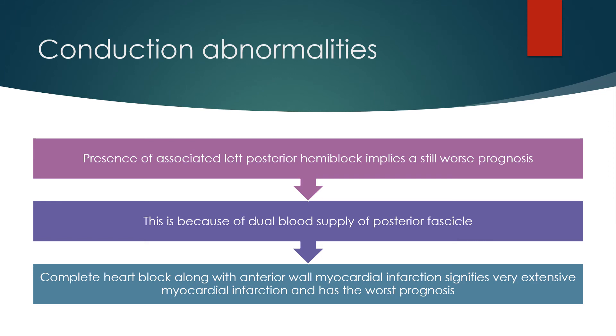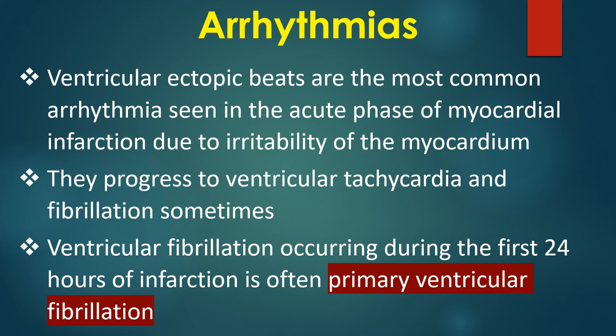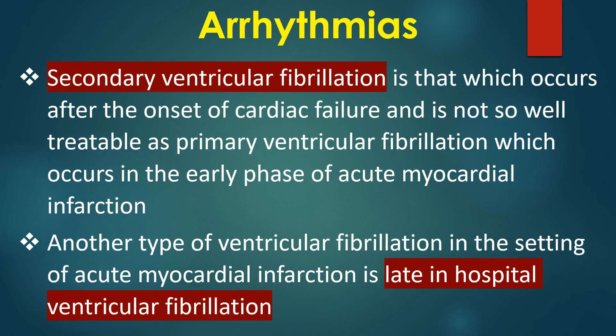Complete heart block along with anterior wall myocardial infarction signifies very extensive myocardial infarction and has the worst prognosis. Ventricular ectopic beats are the most common arrhythmia seen in the acute phase of myocardial infarction due to irritability of the myocardium, and they can progress to ventricular tachycardia and fibrillation. Ventricular fibrillation occurring during the first 24 hours of infarction is often primary ventricular fibrillation. Secondary ventricular fibrillation occurs after the onset of cardiac failure and is not as treatable as primary ventricular fibrillation. Another type is late in-hospital ventricular fibrillation.